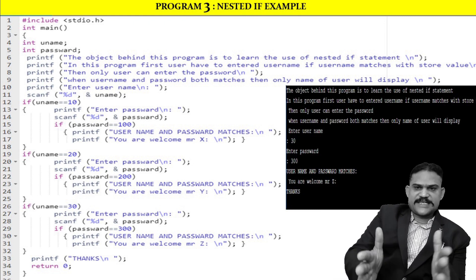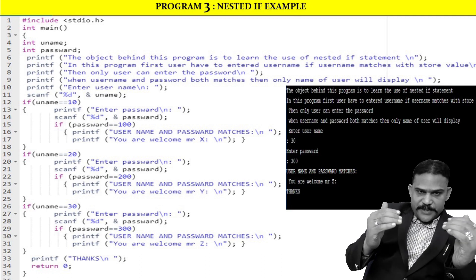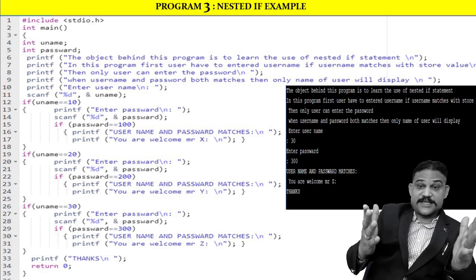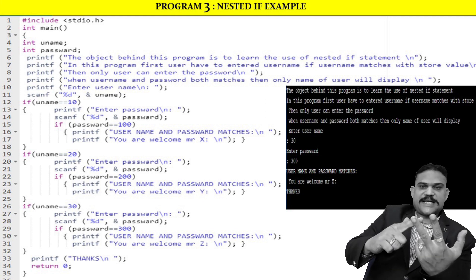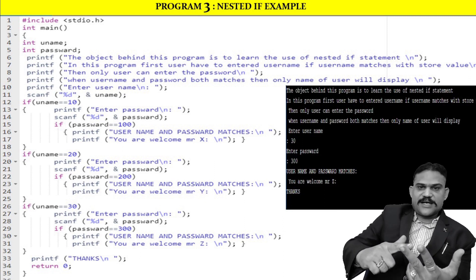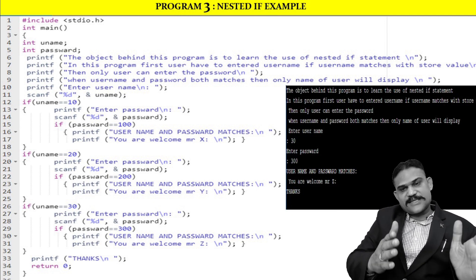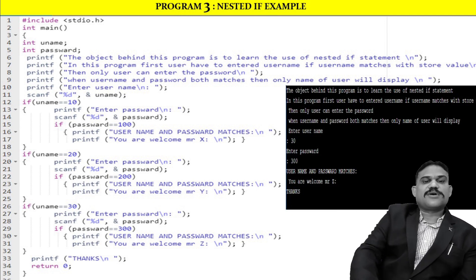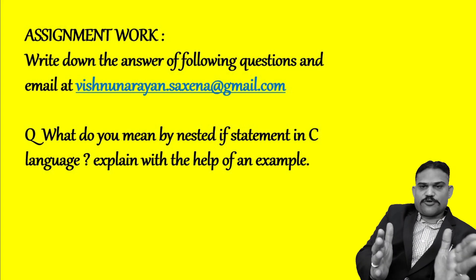In a username and password related program, you match two conditions. First, you match the username. If the username matches, then you ask for the password. After that you match the password. If both match, the welcome message is displayed; otherwise the welcome message will not be displayed.